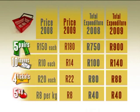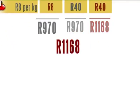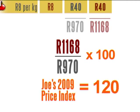In 2008, the basket of goods cost Joe 970 Rand in total. In 2009, the same basket cost him 1168 Rand. The base year is 2008 and the index value is therefore 100. To calculate Joe's price index for 2009, we simply divide the price of the whole basket in 2009 by the price as it was in 2008 and then multiply by 100 to get an index. 1168 Rand divided by 970 multiplied by 100 gives us a price index of 120 for 2009.